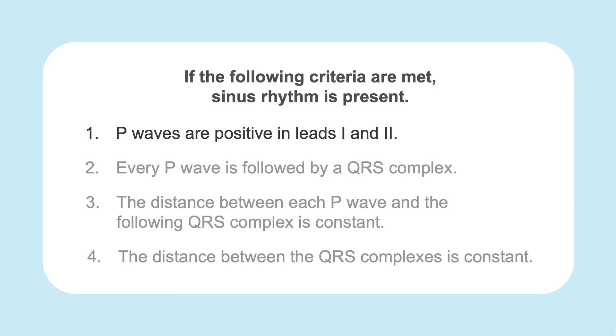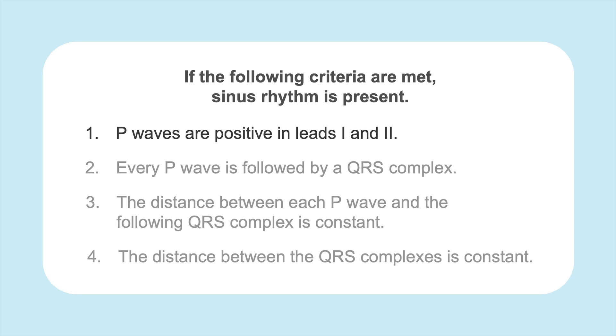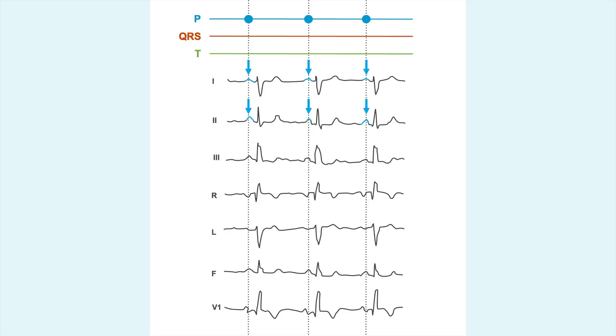We've already learned in the yellow belt section that a normal sinus rhythm is present if the following four criteria are met. Number one, the P waves are positive in leads one and two, depicted by the blue arrow here.